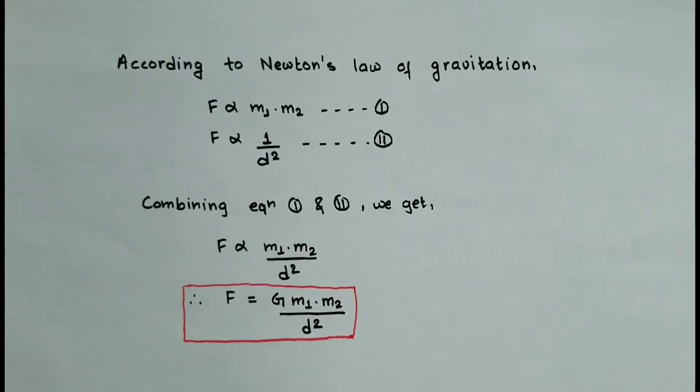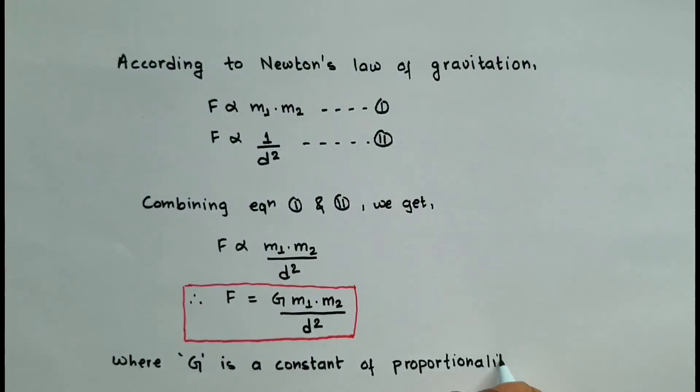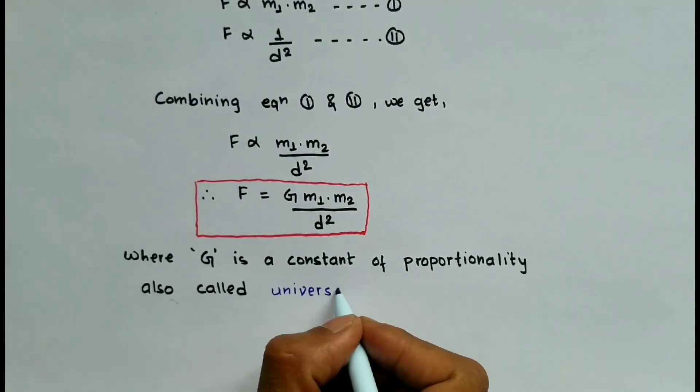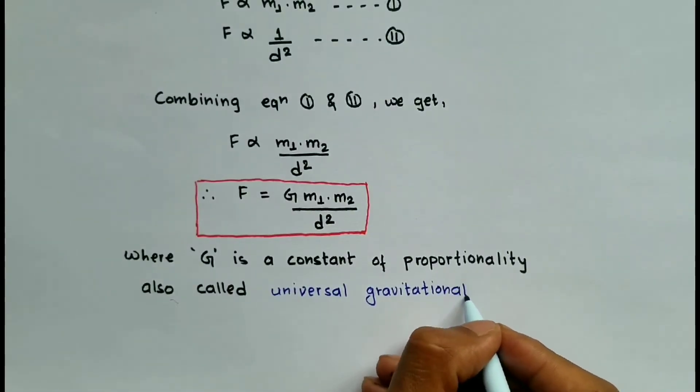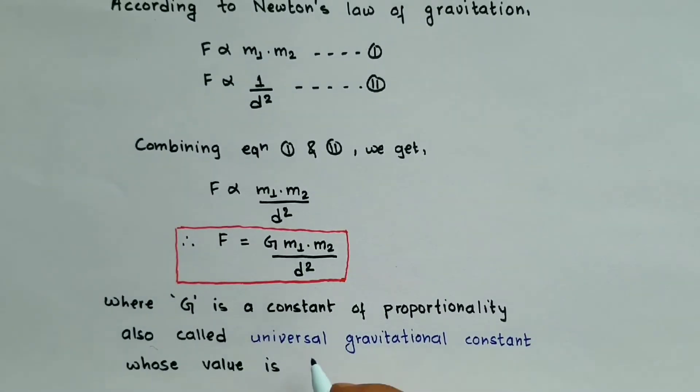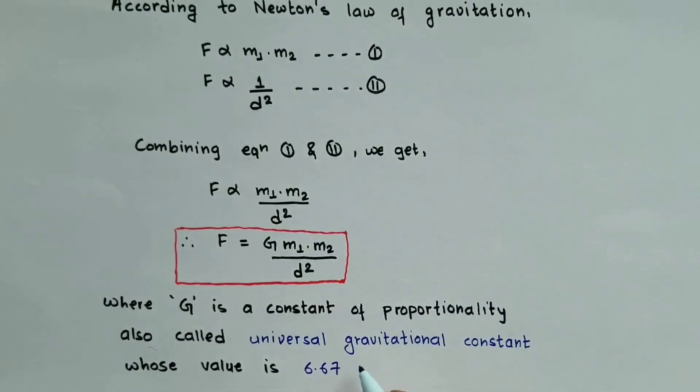Since there are lots of proportionality constants in science, this capital G has its own unique name to prevent confusion. That unique name is universal gravitational constant. Since it's a constant, it has a specific value which is 6.67 times 10 to the power minus 11 Newton meter square per kilogram square.